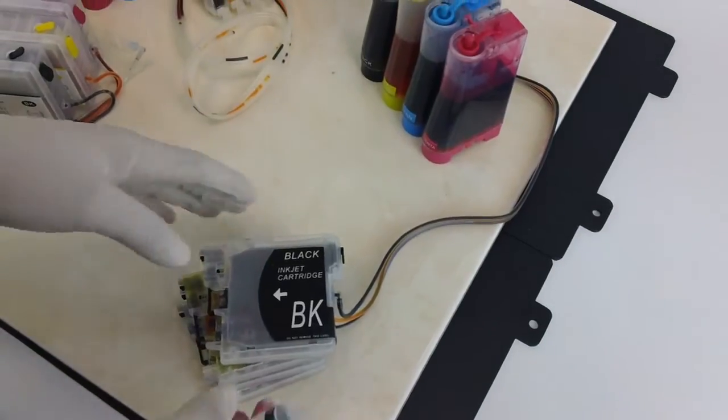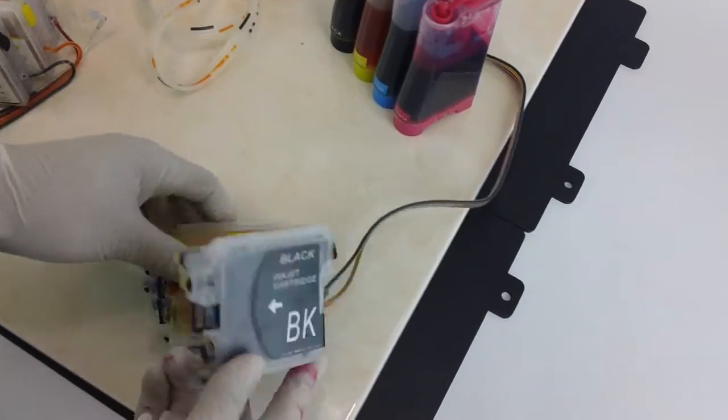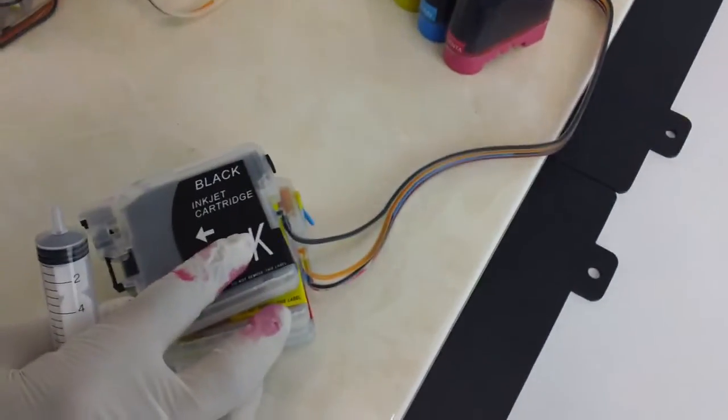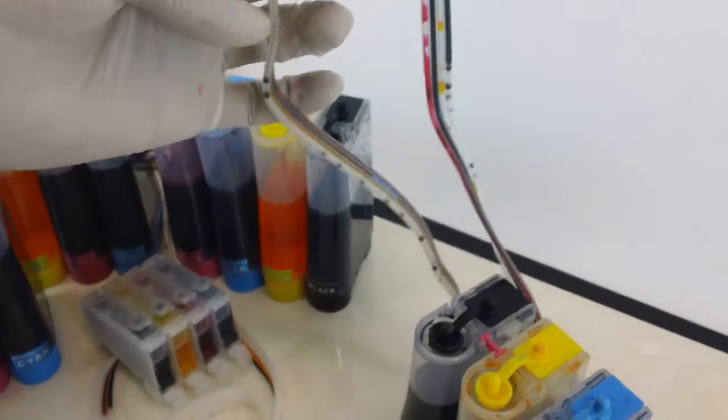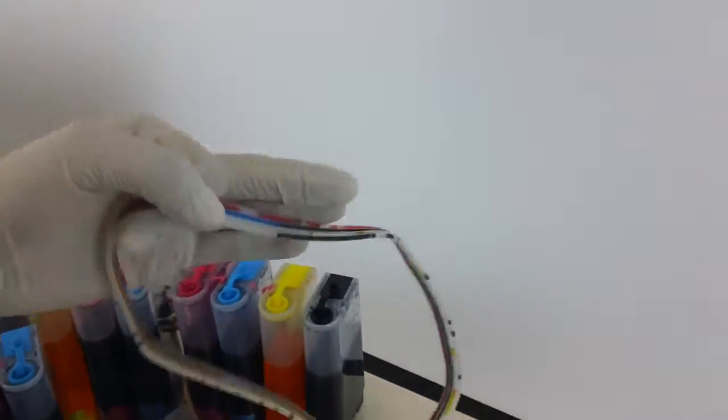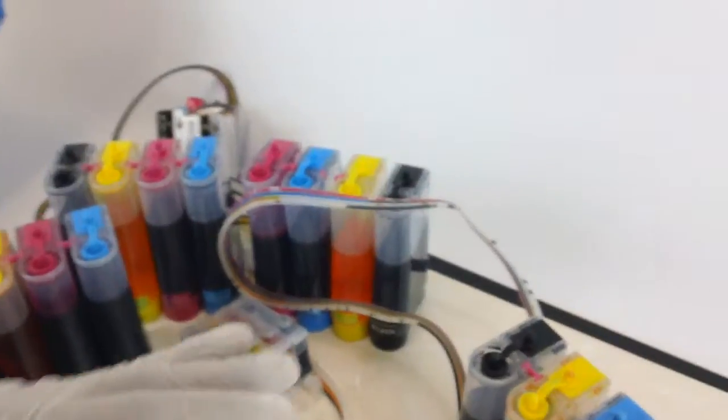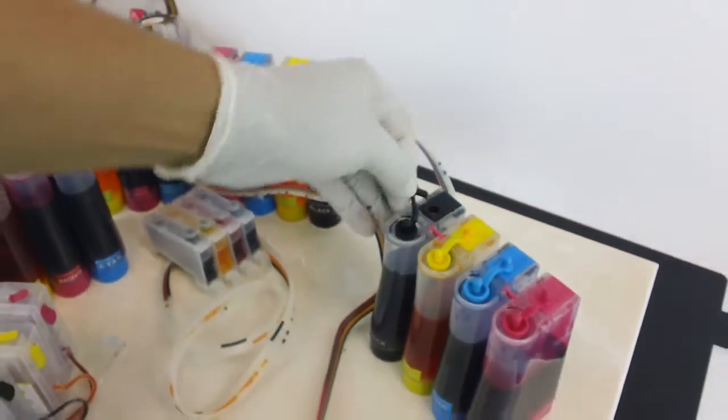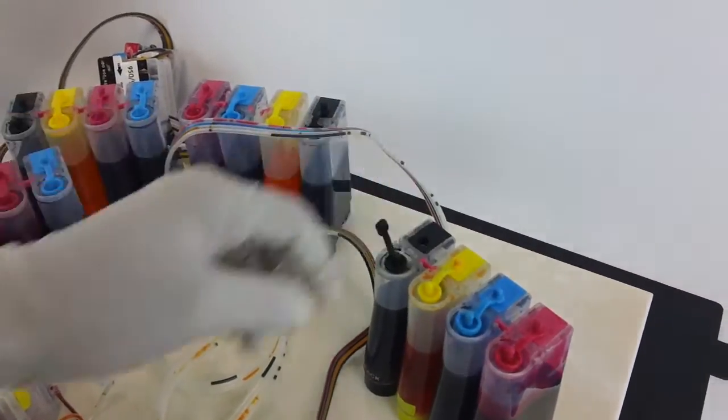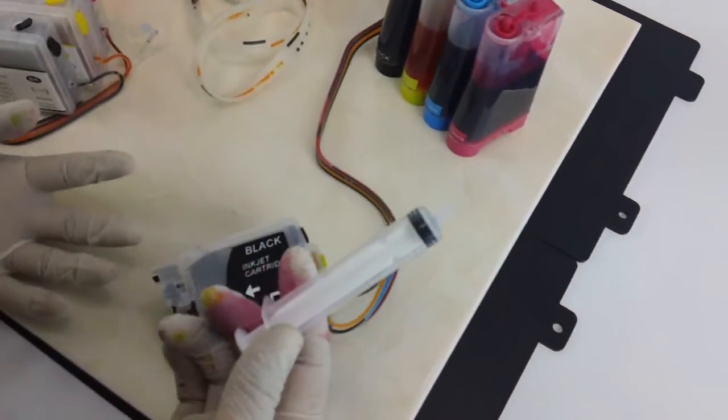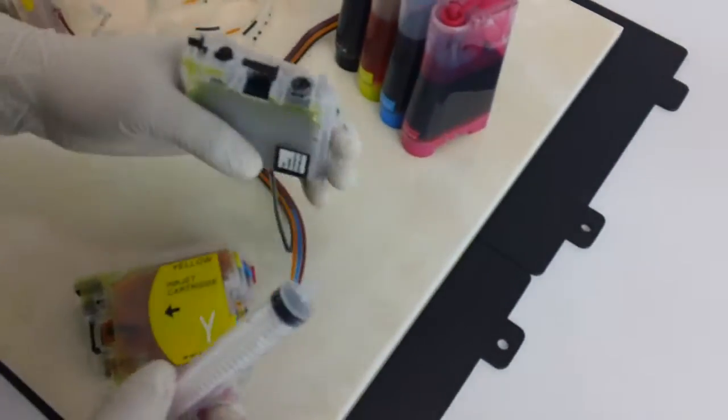First thing you want to do—I'm just gonna do one cartridge for this—that would definitely have to be black. So first thing you want to do is you always want to keep your air vent hole open, so I'm gonna unplug mine here. You're gonna grab a syringe, then you're gonna locate the nozzle on the cartridge.